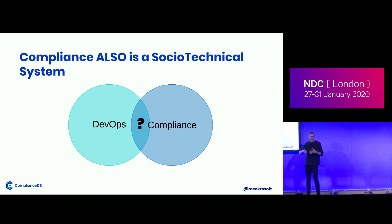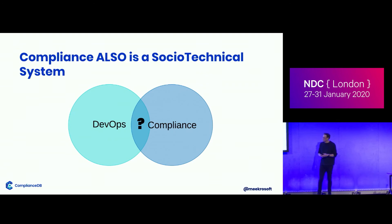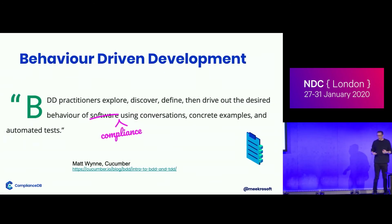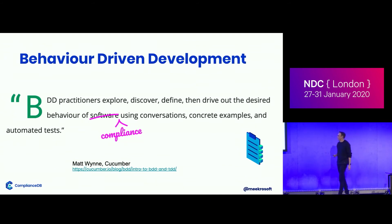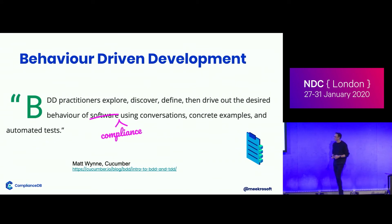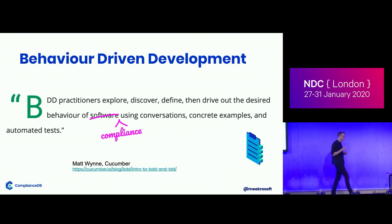So what can you use to bring these two parts of the organization together? Obviously there's a socio-technical thing — have them talk to figure out what compliance controls must be implemented. But there's also a technical component, and I think that technical component is something we already know in software development: it's test-driven development. A specific branch of test-driven development is behavior-driven development, BDD. Matt Wynn's got this great definition: BDD practitioners explore, discover, define, and drive out the desired behavior of software using conversations, examples, and tests. And I think we can apply exactly that same process to the world of compliance.